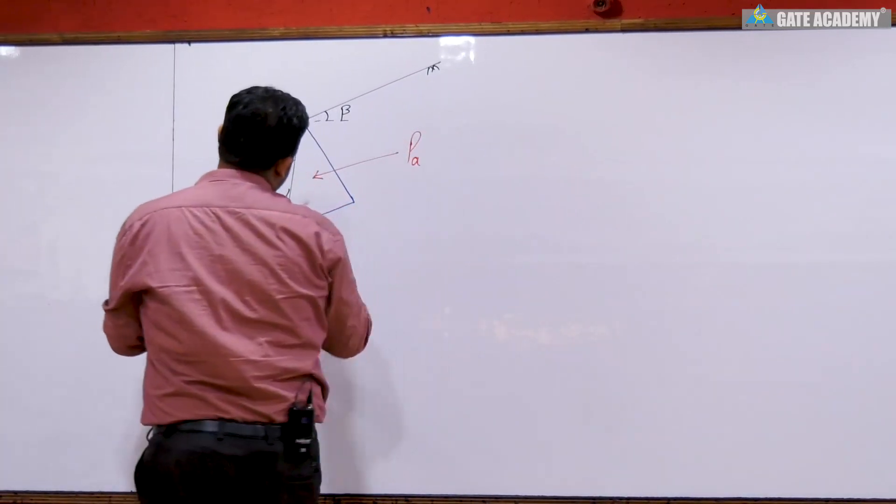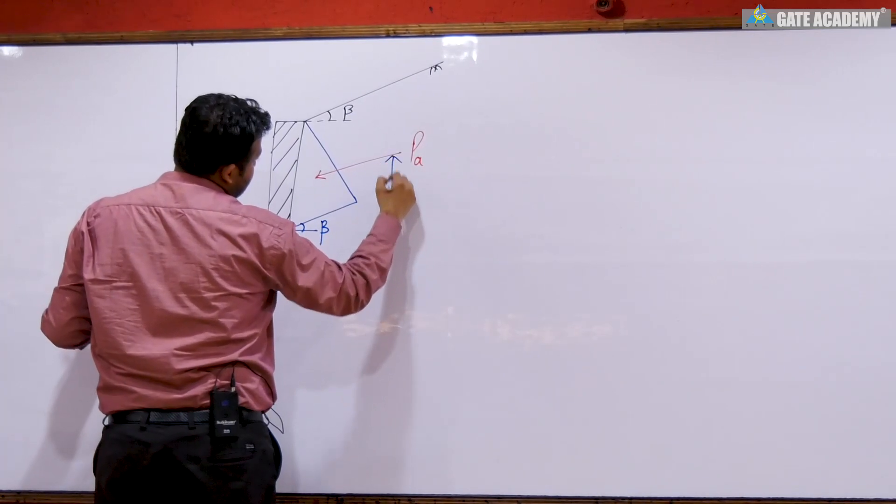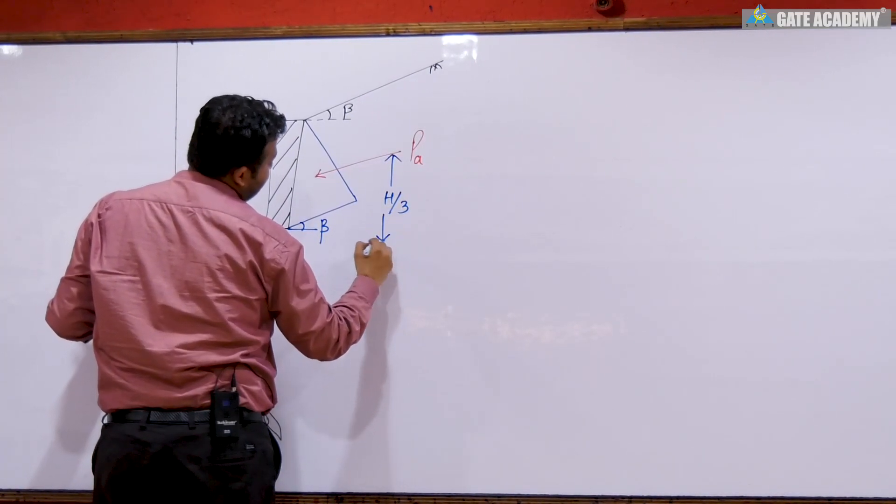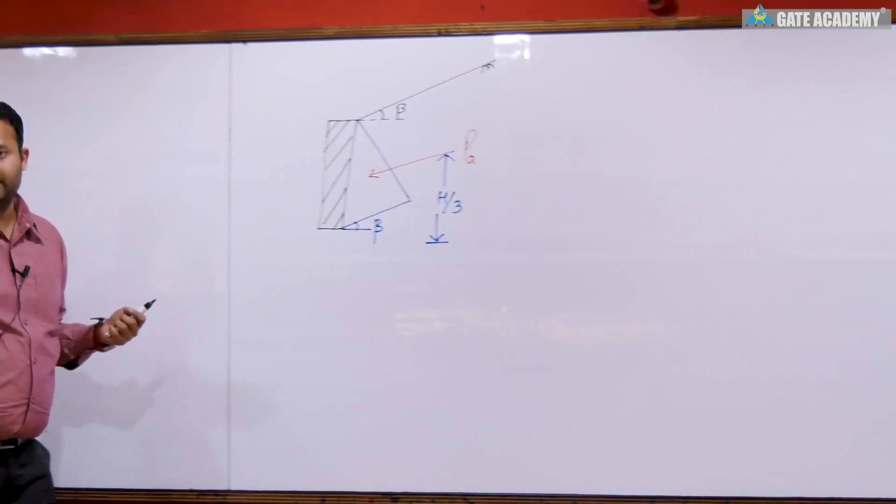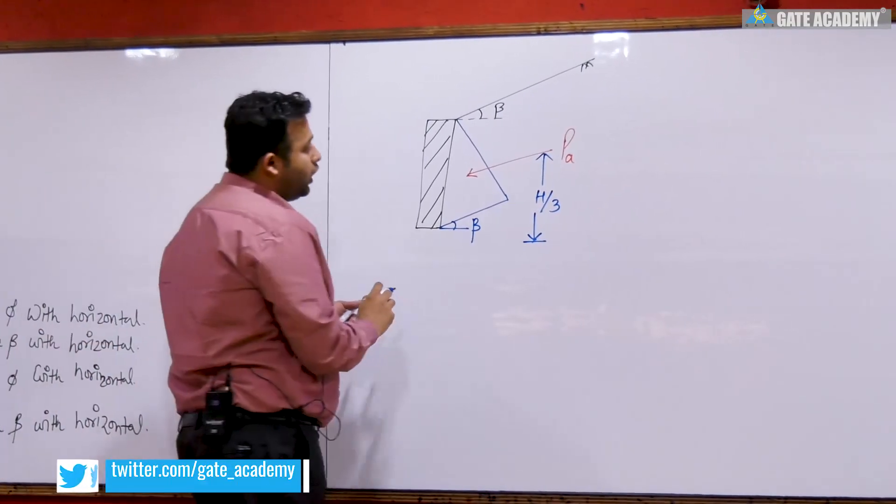My answer is that the force is located, of course, at H by 3, because for a triangular distribution it acts at H by 3 from the base.